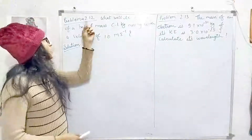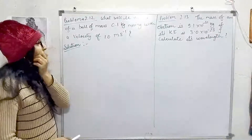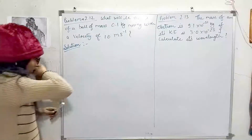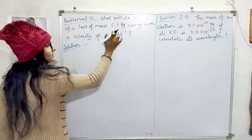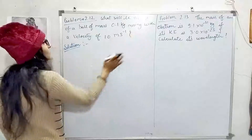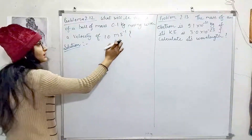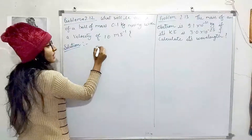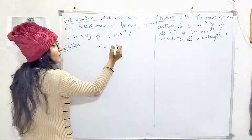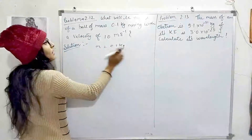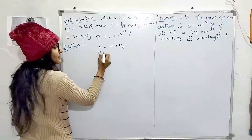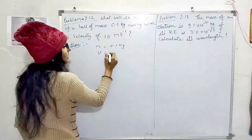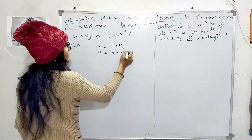Problem number 2.12: What will be the wavelength of a ball of mass 0.1 kg moving with a velocity of 10 meter per second? We have been given the mass as 0.1 kg and the velocity as 10 meter per second.